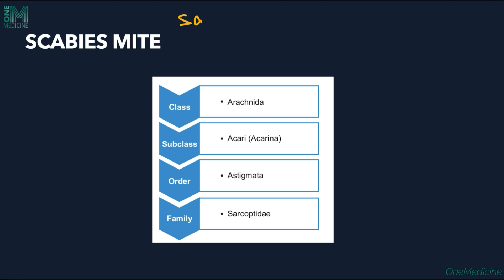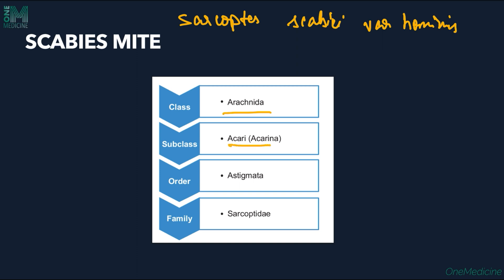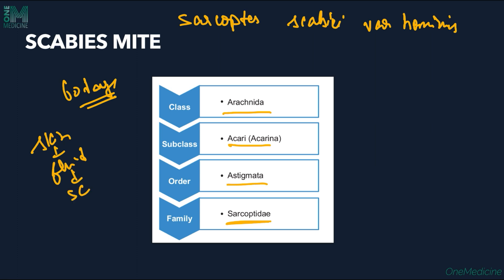The scabies mite is Sarcoptes scabiei var. hominis. It belongs to the class Arachnida, the subclass Acari, the order Astigmata, and the family Sarcoptidae. The life cycle is about 60 days. The mite comes in contact with the skin and exudes a fluid that causes dissolution of the stratum corneum, thereby forming a burrow in the stratum corneum of the skin.